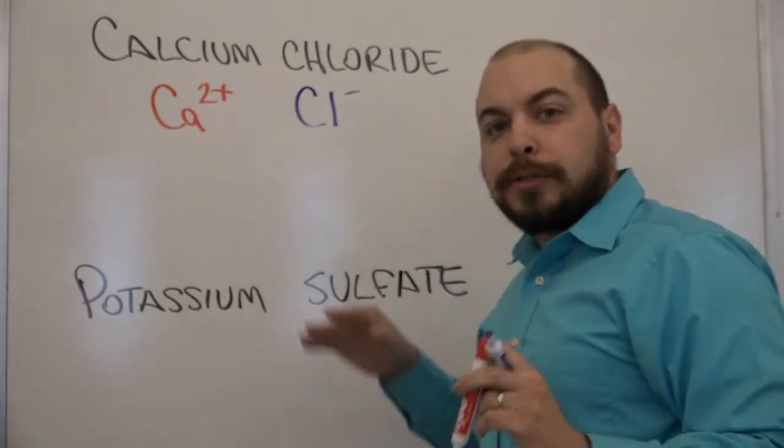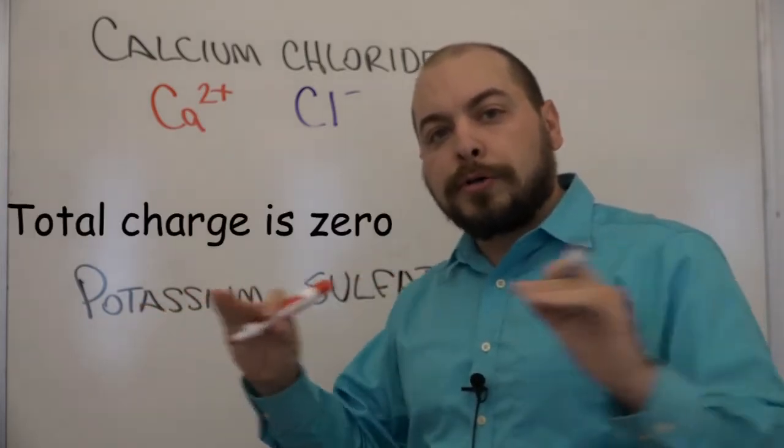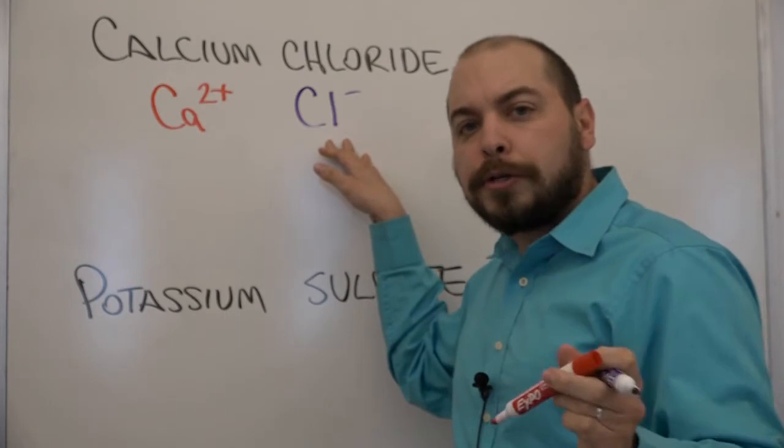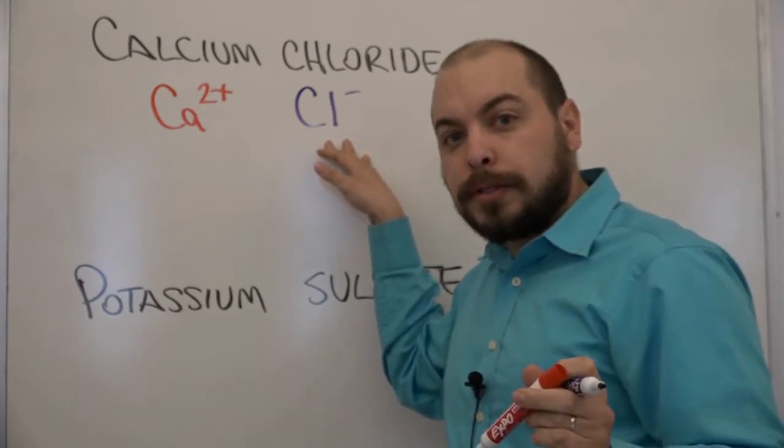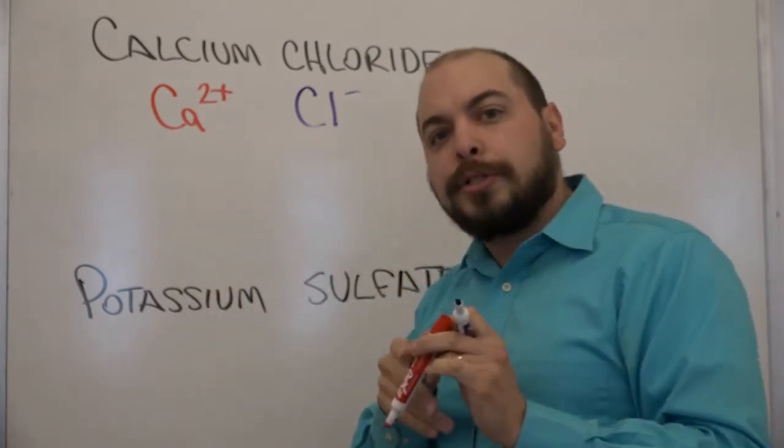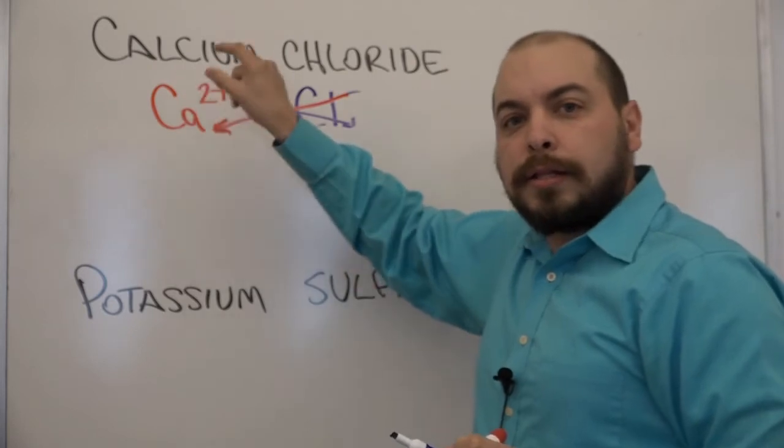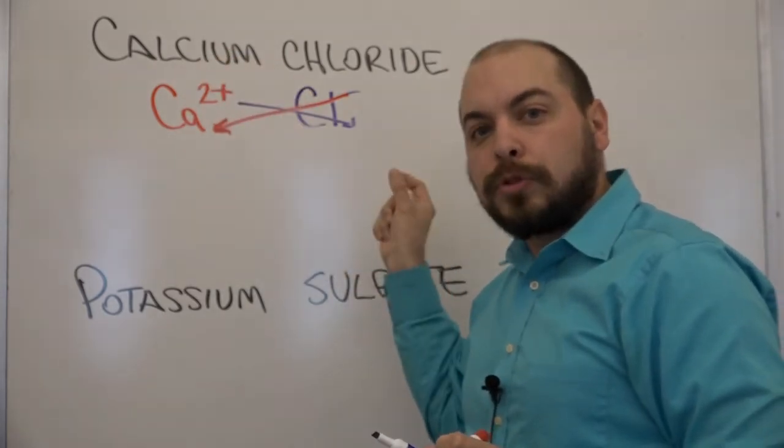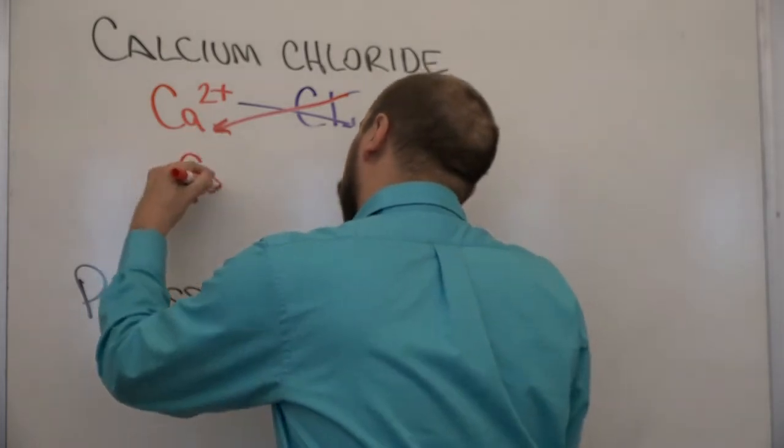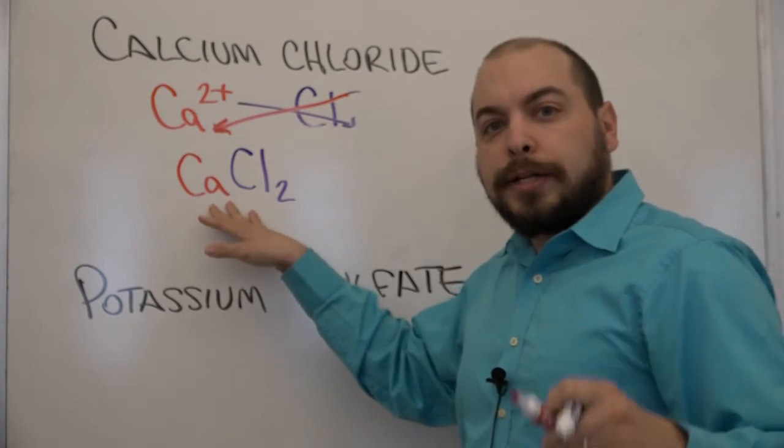Now the reason we did this is because remember ionic compounds are made of ions however when put together the total charge is zero. What that means is we need to somehow have a 2 plus charge and this negative 1 charge balance. And the way we do that is with subscripts. So with calcium chloride what we're going to need to do is what we call the criss cross method and let me show you how that works. We take the charge and we throw it across as a subscript on the other ion. So what we end up with as a result is CaCl2. So this CaCl2 we call calcium chloride.